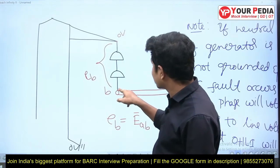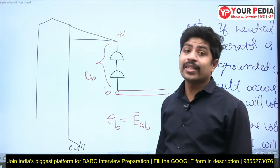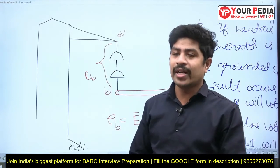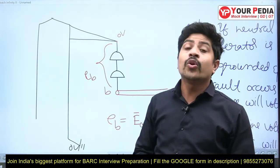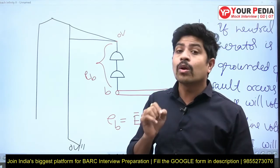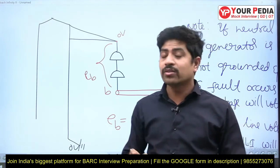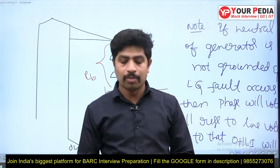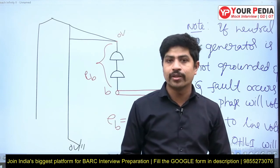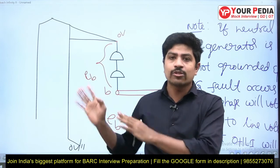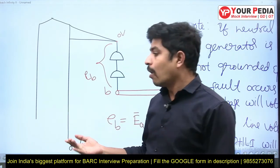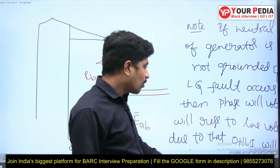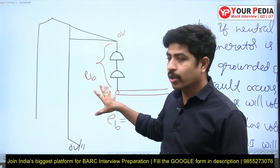Once the insulation fails, that phase is directly connected to ground — another LG fault occurs. Eventually all three phases fail, resulting in a triple line-to-line fault, which is the most severe fault and can damage the entire system. That is why the neutral of the synchronous generator must and should be grounded. This was the question asked at BARC for the post of a scientist, after clearing the GATE exam or written examination. Almost half an hour can be spent on this topic with many cross-questions.